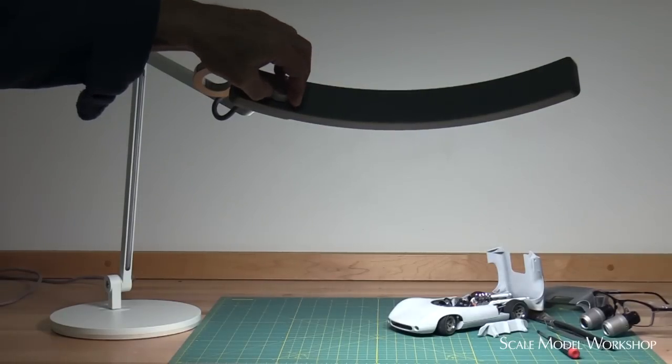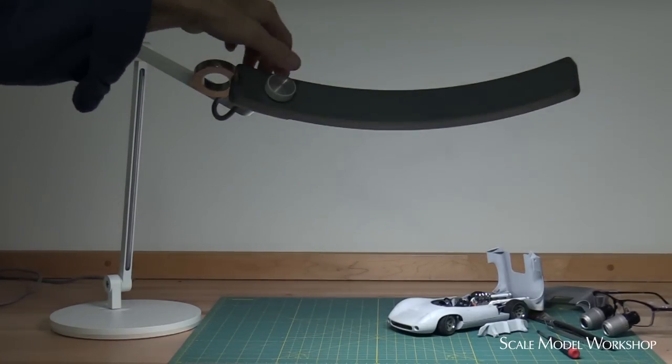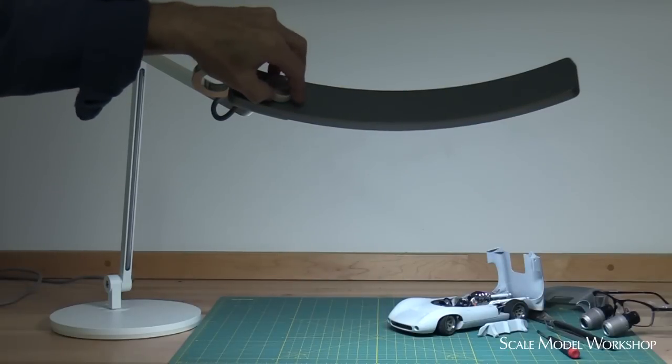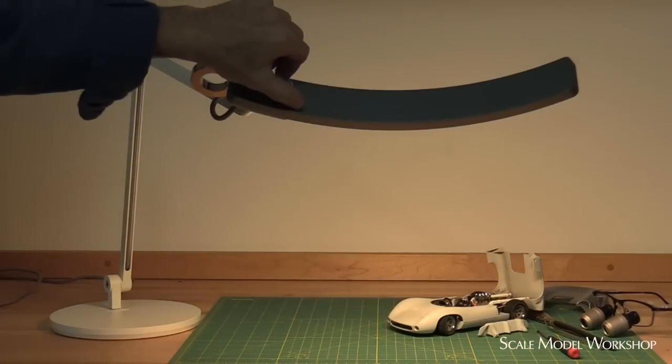When you first turn the knob, you adjust the brightness. If you push in, you switch to the color adjustment, which takes you through a range of 2700 to 5700K.